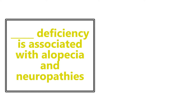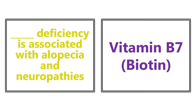Vitamin B7 deficiency, also known as biotin deficiency, is associated with alopecia and neuropathies. Please make sure that you know both names for all the different vitamins — vitamin B7 is also known as biotin. Getting a question wrong because you didn't know the alternate name would be a very silly mistake.